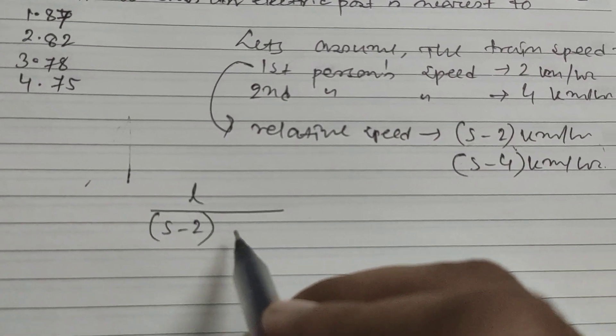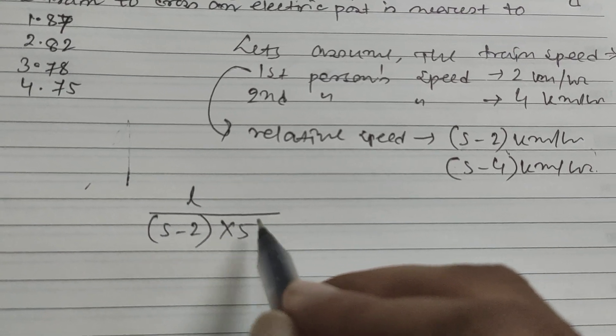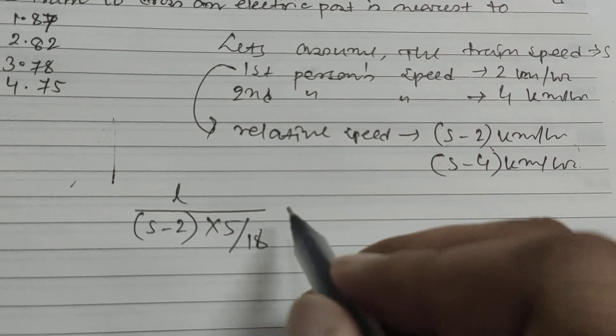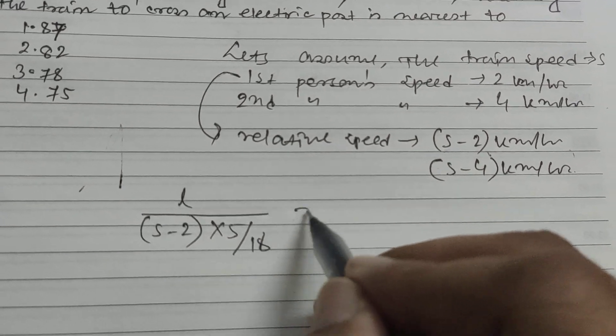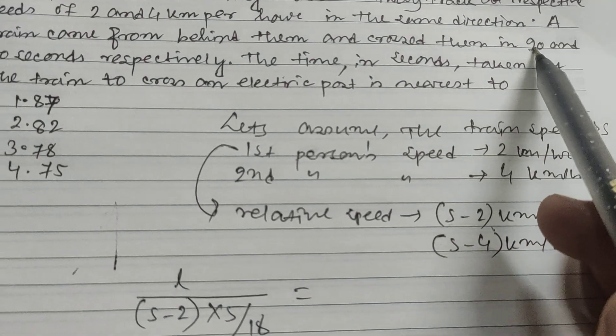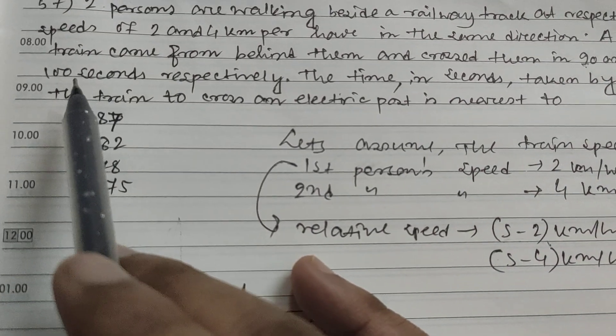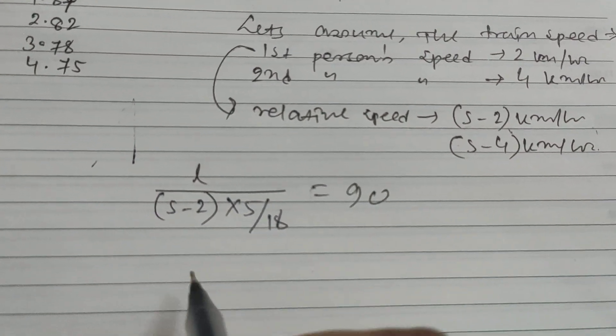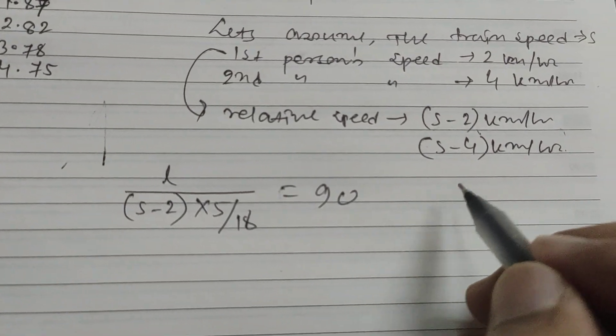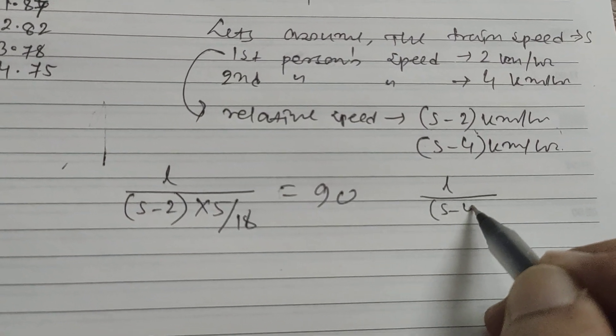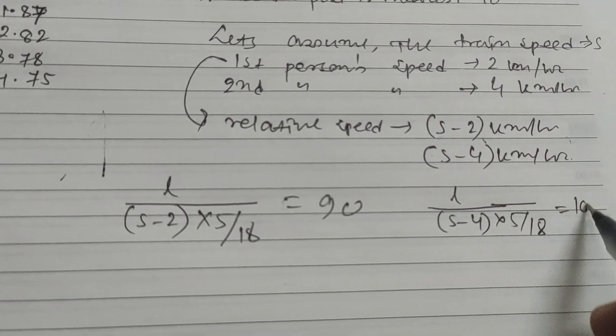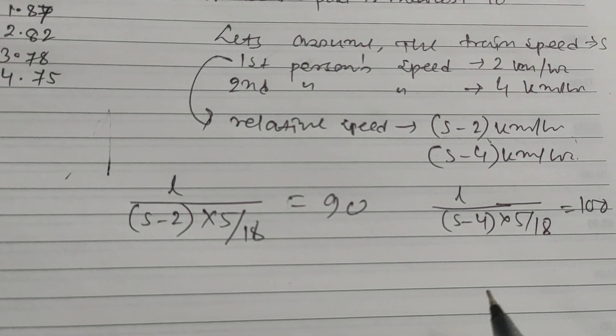This is 90 seconds for the first and 100 seconds for the second. For the first one this is 90, and for the second one, l divided by s minus 4 multiplied by 5 by 18 equals 100.